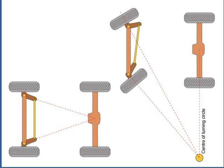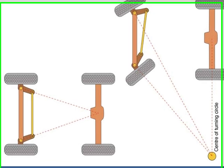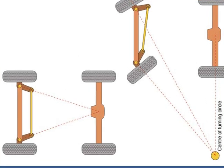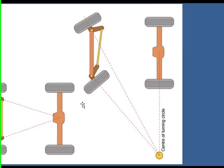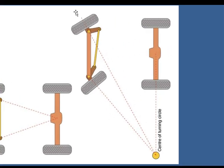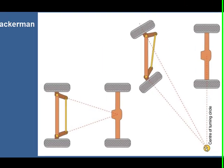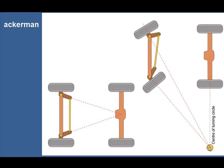Perfect Ackermann steering ultimately is the inside tire having a larger angle than the outside tire, and both of their lines bisect at the center of the turning circle, as you can see from the picture.